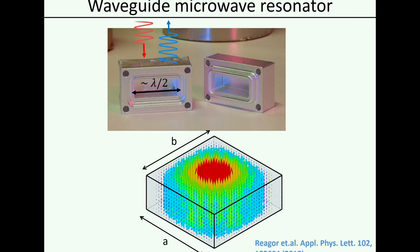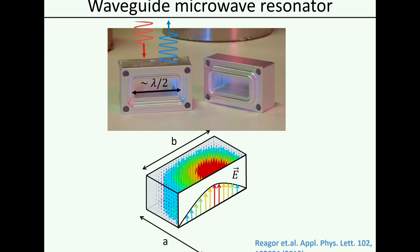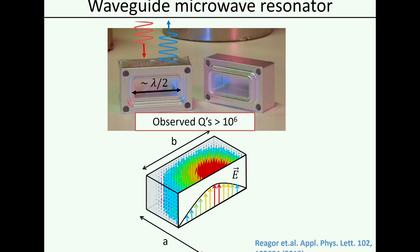The advantage of these resonators is they are very easy to build — essentially you can send one of your PhD students or go yourself into the workshop, machine it out of a solid block of aluminum, bolt it together, cool it down, and you observe quality factors in excess of a million. Reaching up to 10 million is very straightforward in such a system.